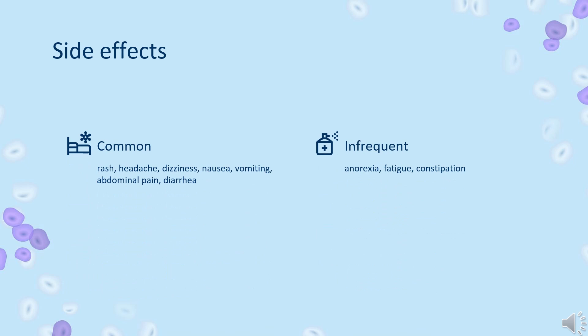Side Effects. Adverse drug reactions associated with fluconazole therapy include: Common (greater than or equal to 1% of patients): rash, headache, dizziness, nausea, vomiting, abdominal pain, diarrhea, and/or elevated liver enzymes.